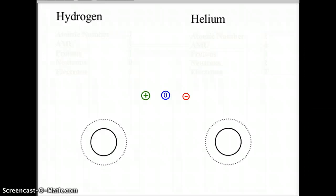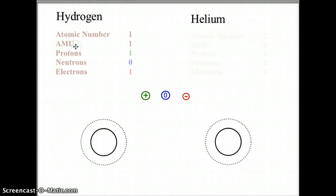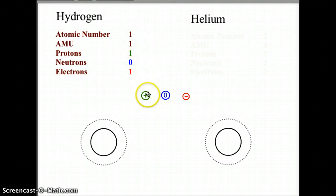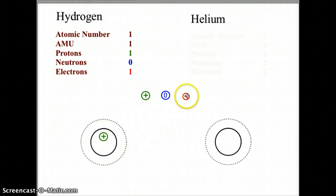Let's look at the first two elements of the periodic table. Hydrogen is atomic number one. It has one proton, one electron, and its AMU is one, so it has zero neutrons. To build the Bohr model for hydrogen, we would have one proton in the nucleus and one electron in the first orbital level.